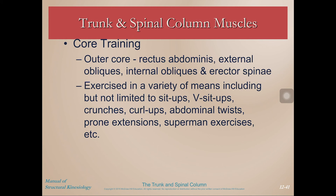The outer core muscles are what people usually think of when doing extra core work after a training session: rectus abdominis, external obliques, internal obliques, and the erector spinae on the back — trained through back extensions, deadlifts, stiff-leg deadlifts, etc. That wraps it up for movements of the trunk and spinal column. Remember to use appropriate terminology for movements and the regions they occur in, and remember the importance of core musculature as the linkage between upper and lower body. The next lecture will look at the specific muscles that create these joint movements.